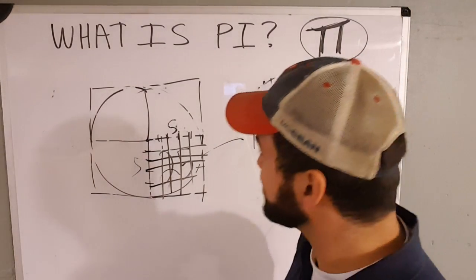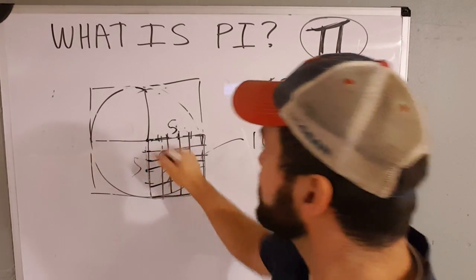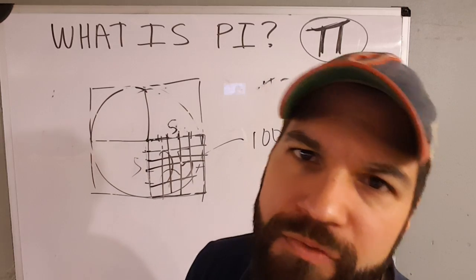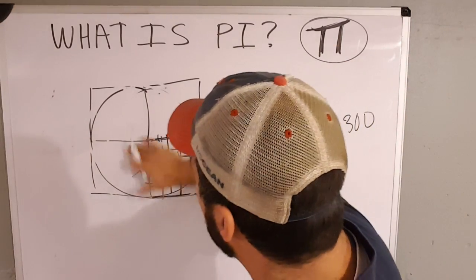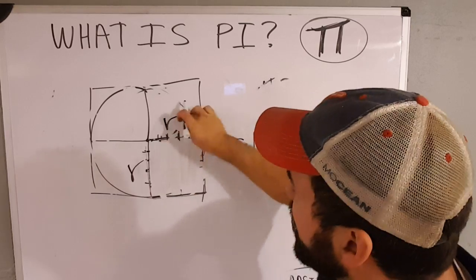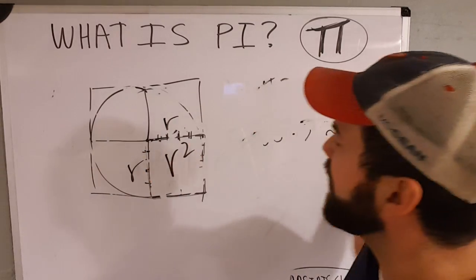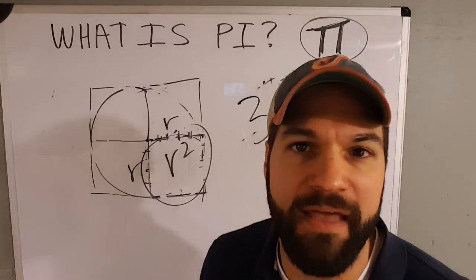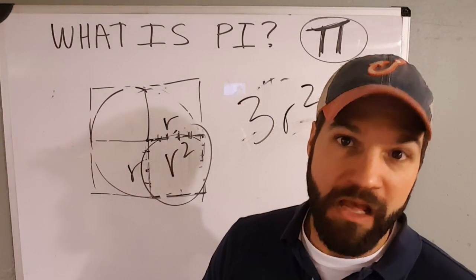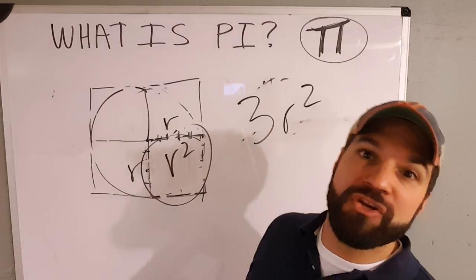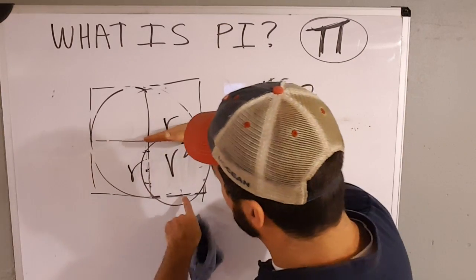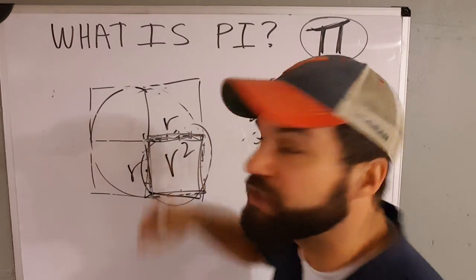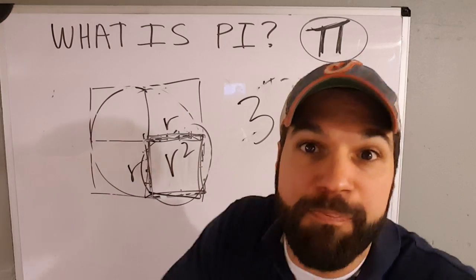But I lied to you again. Because guess how many of these actually fit inside there? Guess. Not three. I don't take this R, multiply it by this R, and what's R times R? R squared. I don't take this R squared and say three of these R squareds fit in there. Because a little more than three. A little more than three. As a matter of fact, the number of these R squareds, these squares built with the radius, the number of those that fit inside is pi. Exactly pi, man. Pi of them.